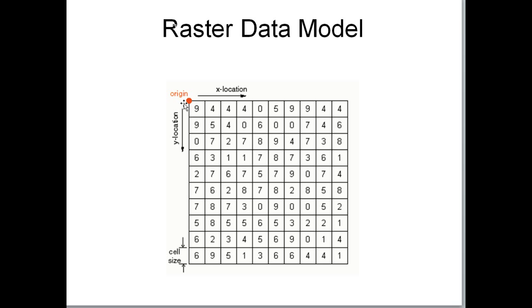Each grid cell has one value associated with it. In a digital elevation model, which is a raster file, each cell has one value — the elevation of that cell. That cell could cover a one-meter square for very high resolution, a 10-meter square, or even a kilometer square. Some climate data uses average temperature for each square kilometer, which is very coarse resolution. You can also have rasters that show type of vegetation, with each cell given the predominant vegetation type.